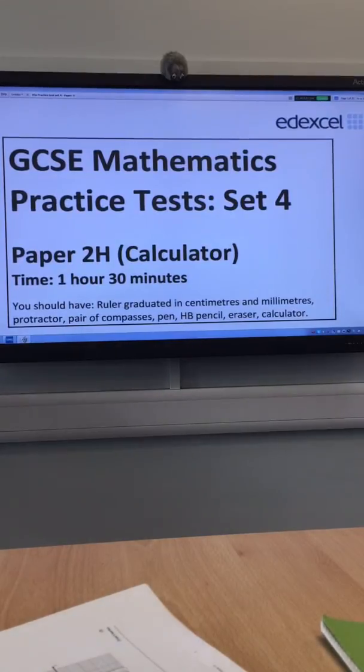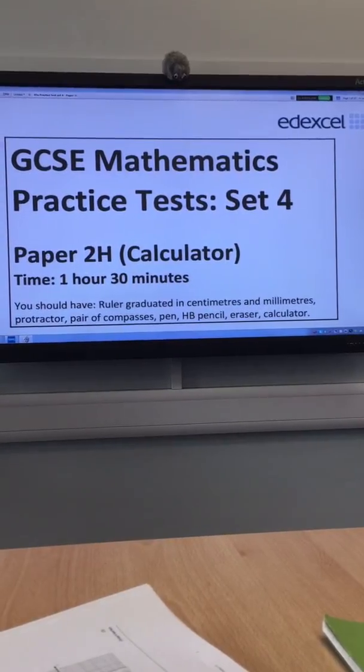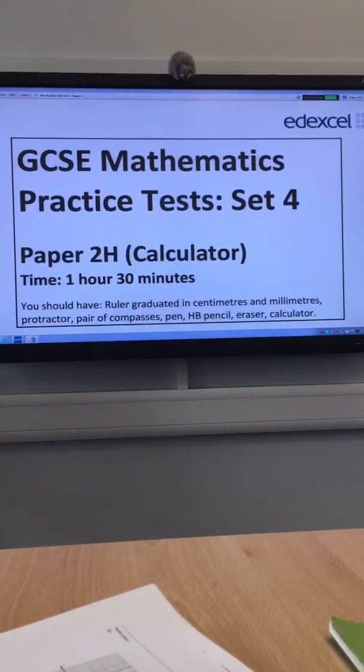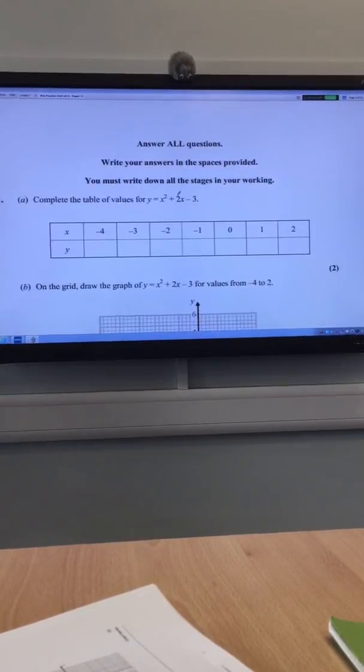Okay, can we turn the volume down so that if you want to hear it again you can. Right, so the first one says complete the table for values like this. It's a calculator allowed paper.